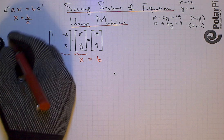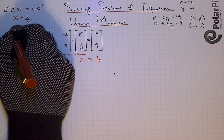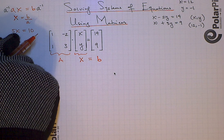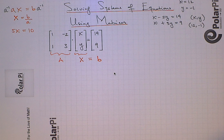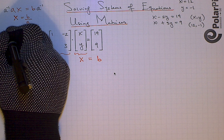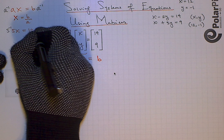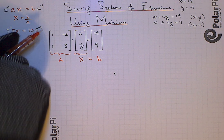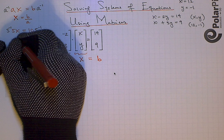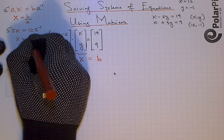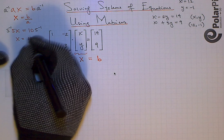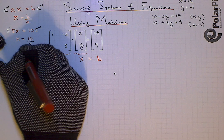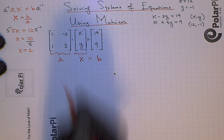A simple example: if I had 5x equals 10, here the constant A is 5 and the constant B is 10. I multiply by 5 inverse, or 5 to the negative 1, on both sides. On the left side, I get basically 5 divided by 5, so I just get x. And then on the right side, I get 10 divided by 5. So x equals 2.